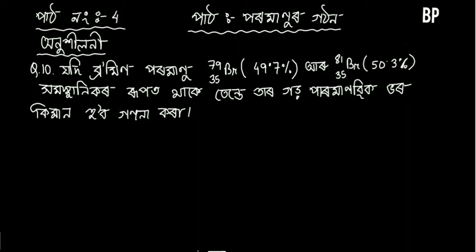Hello students. We are looking at atomic equation number 12. For bromine, one isotope is mass 79 — that is 49.7% abundant — and another is mass 81, which is 50.3% abundant. We can see the properties of the isotopes of bromine.